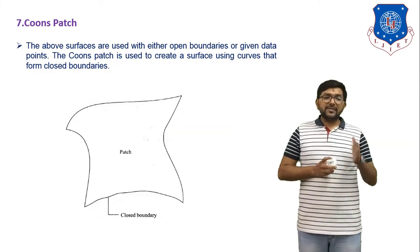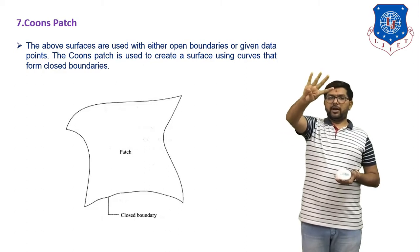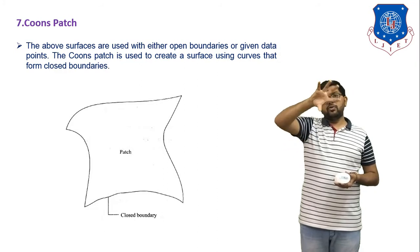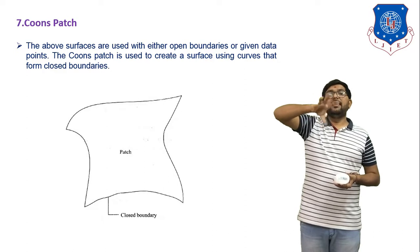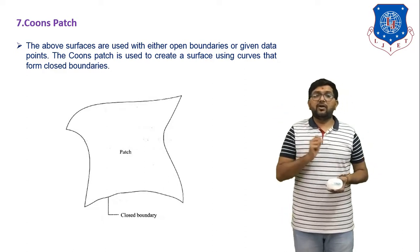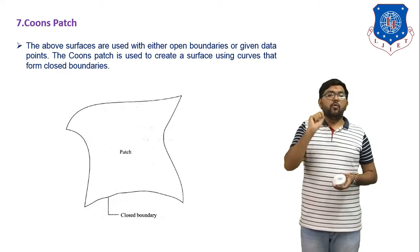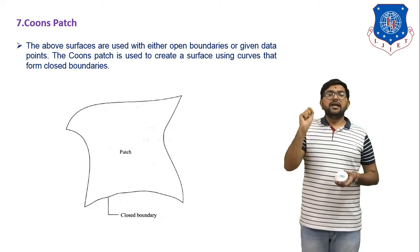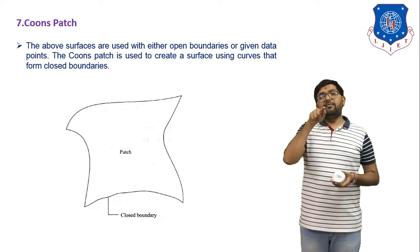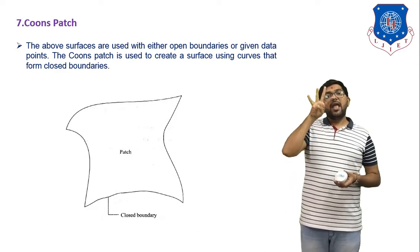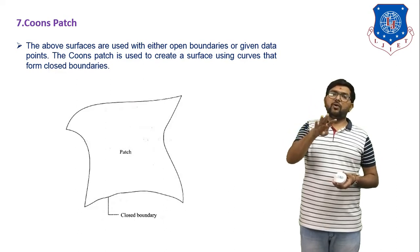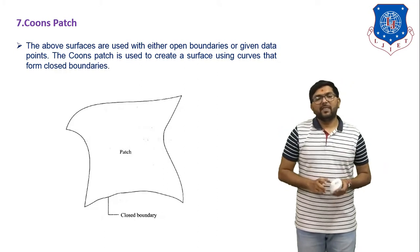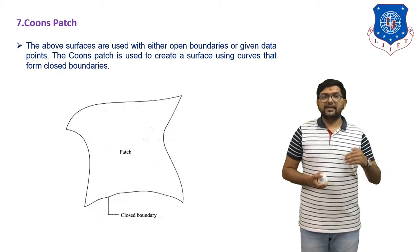Next is Coons patch. Coons patch means: if we have four boundary curves of different shapes and we join these four boundary curves to generate one closed object, that type of surface is considered a Coons patch. The above surfaces are used with either open boundaries or given data points. The Coons patch is used to create a surface using curves that form a closed boundary. We use four boundary curves, join all four, and generate one closed surface. That closed surface represents the Coons patch surface.